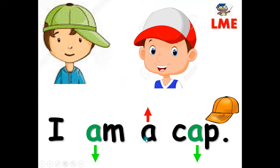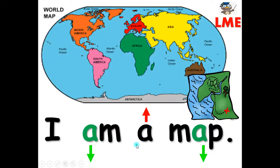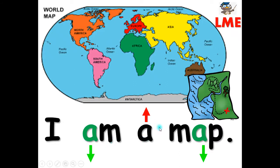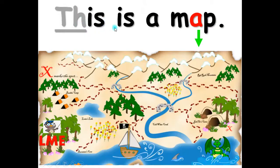I am a cap. C-A-P — cap. I am a cap. I am a map. This is the map of the world — America, North America, South America, Africa, Europe, Asia, Australia. M-A-P — map. I am a map.